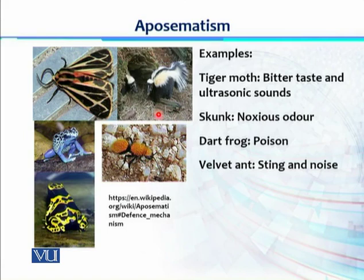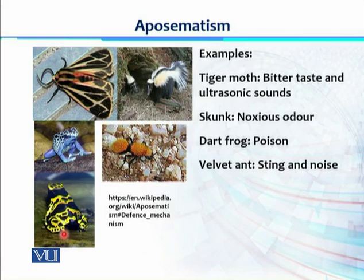Skunk is another example: it has scent glands that produce a very bad, noxious odor which predators dislike, keeping them away. The dart frog's body has very bright color patterns, but its skin is also poisonous — it contains poison glands, so if eaten by a predator it would be paralyzed. The velvet ant has a sting and creates noise, so with both in combination it serves as a warning signal.